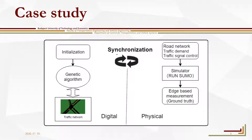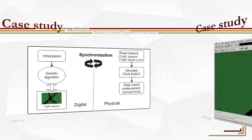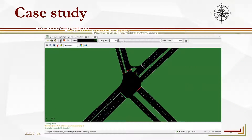The average traffic volume — that is, the flow of each edge in the network — is measured. This measured flow is taken as ground truth, and the result of the calibration output represented by simulated flow are compared simultaneously. Here is a video clip showing a replica of the real-world traffic situation.